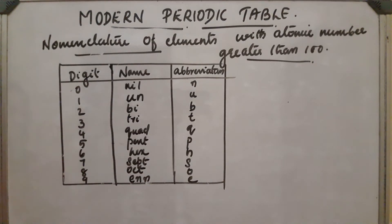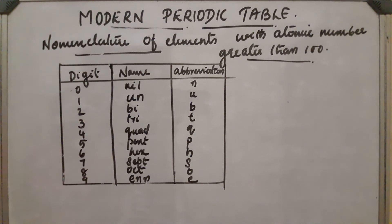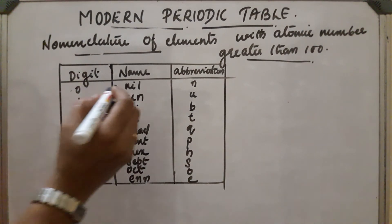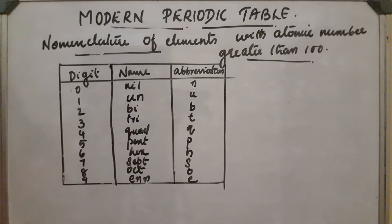Next, the nomenclature of elements with atomic number greater than 100. In the long form periodic table, how can we name elements whose atomic number is greater than 100? Names are derived from the atomic number using numerical roots for digits 0 through 9. These roots are linked together in the order of digits, and at last we add 'ium'.